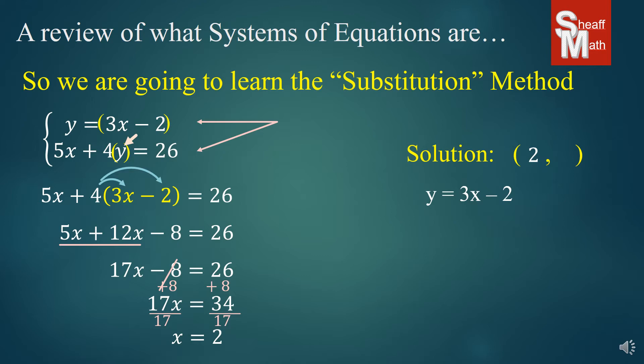I'm going to substitute our new x, 2, in for the x in this equation. Now I'm going to simplify and solve for y. 6 minus 2, y equals 4. I just found the y in our point. There is our solution, 2, 4. That's the point where these two lines intersect.